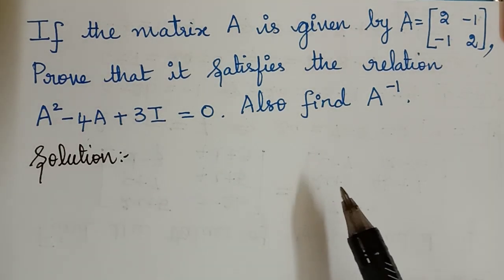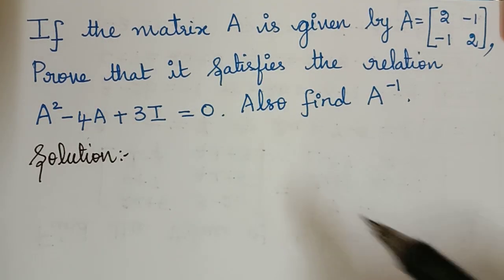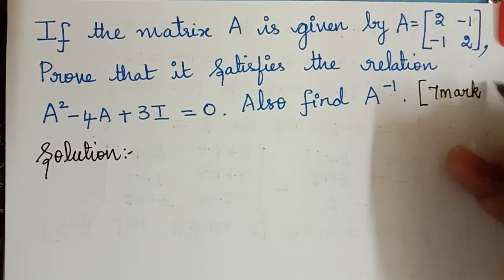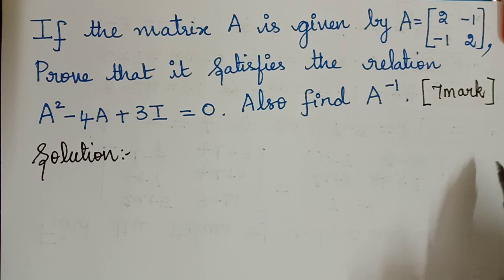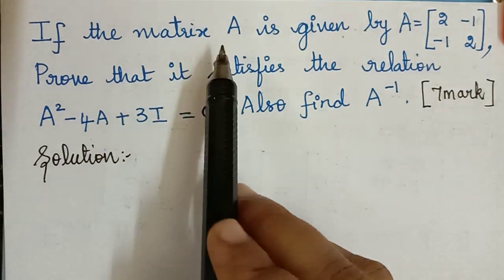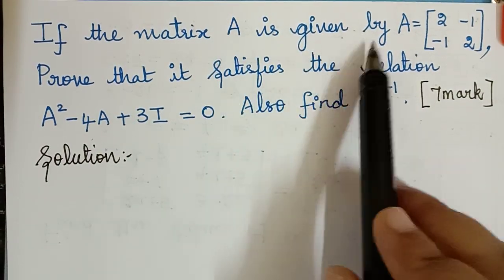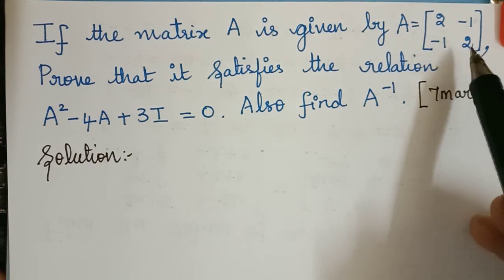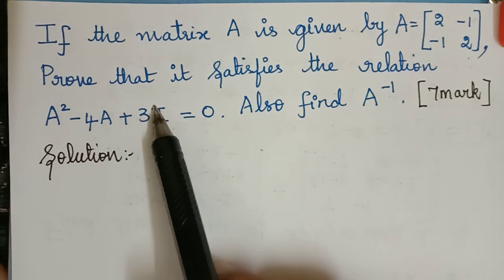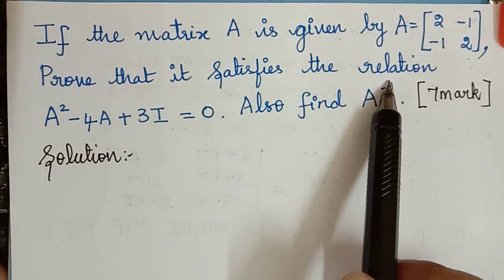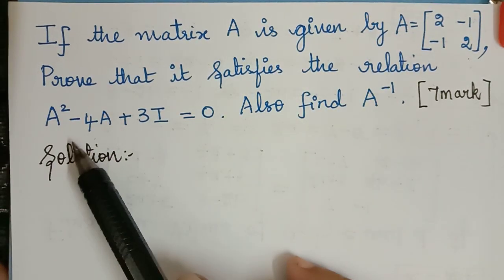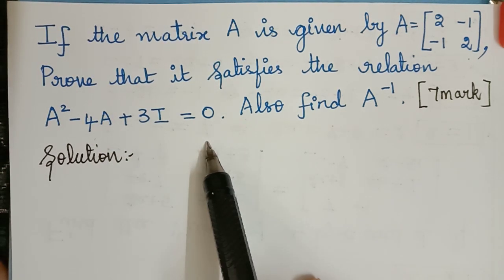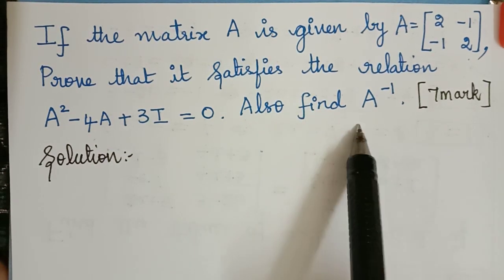Hello students, this is an important 7-mark question. So let us solve this question now. If the matrix A is given by A equal to [2, -1; -1, 2], prove that it satisfies the relation A squared minus 4A plus 3I is equal to 0. Also find A inverse.